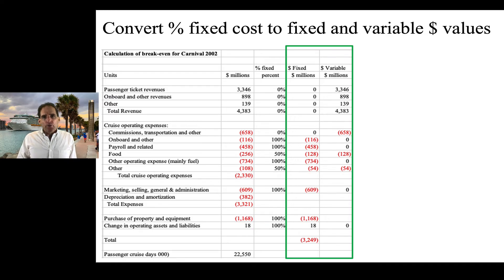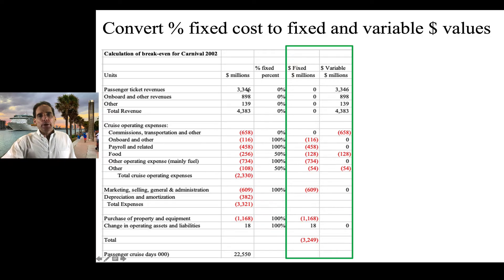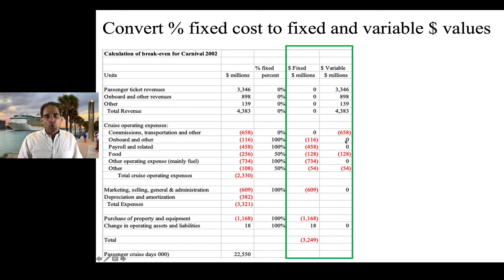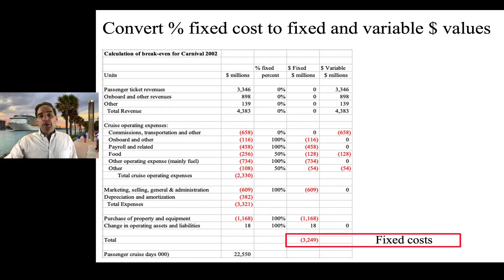Once we've calculated the percentage fixed costs, we convert them back to absolute dollar values. So we take our $3.3 billion in passenger ticket revenues — zero percent of that is fixed, so we have zero dollars fixed and $3.3 billion variable. Similarly, for onboard and other expenses, assuming they're 100 percent fixed, we've got $116 million of those expenses, all of which are fixed and none variable. We're just converting back to absolute dollar values. This is useful right away because it gives us our total fixed costs of $3.3 billion, which will create that horizontal fixed cost line when we get to the chart.